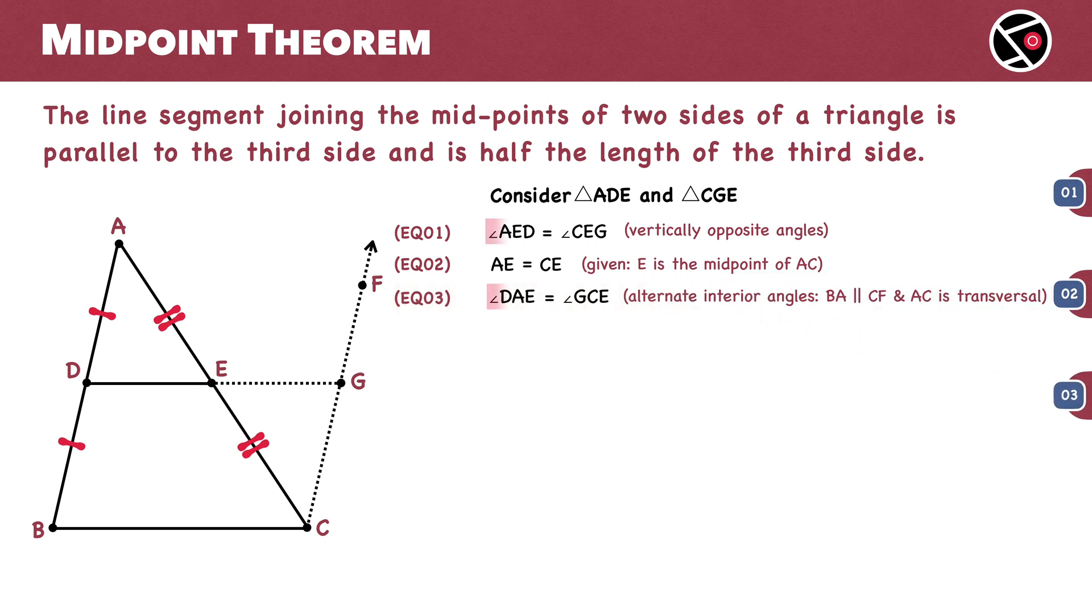With two pairs of equal corresponding angles and the included sides also equal, by the ASA criterion for congruence, triangle ADE is congruent to triangle CGE.